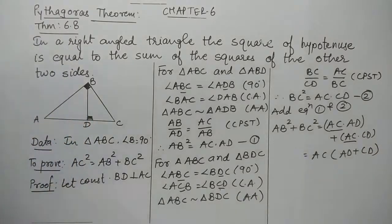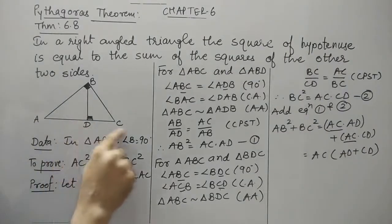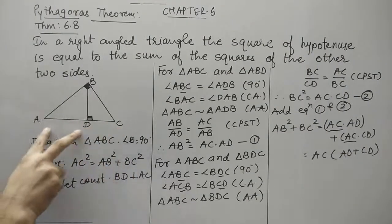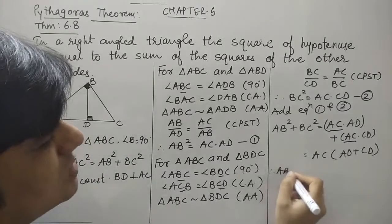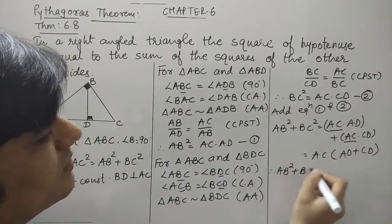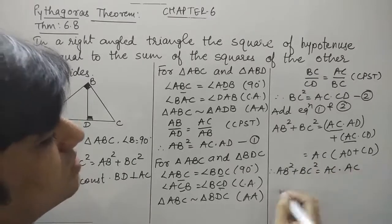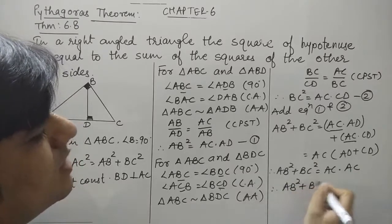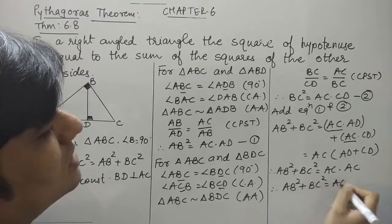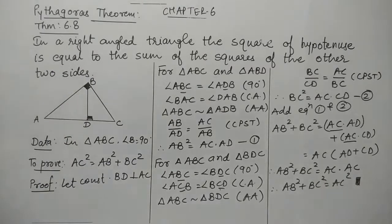Now, what is the sum of AD and CD? As you can see, A, D, and C are collinear points. So AD + CD = AC. Therefore, AB² + BC² = AC × AC = AC². Hence, we can see that the Pythagoras theorem is proved.